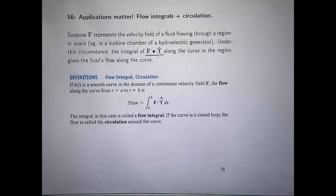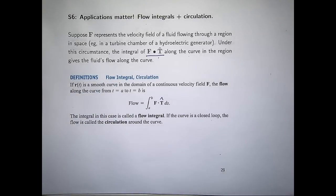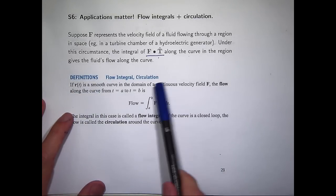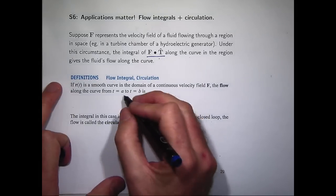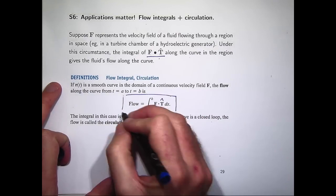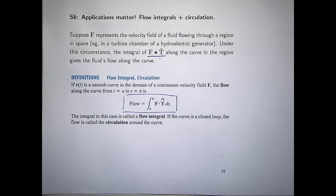In the following definition, suppose we have a smooth curve, no breaks or cusps or anything like that, and you have a velocity field F where all the components are continuous functions. The flow along a curve from one point to another, the endpoints, is this path or line integral.